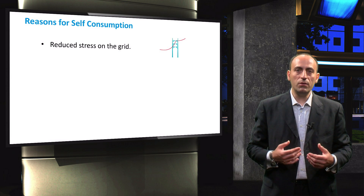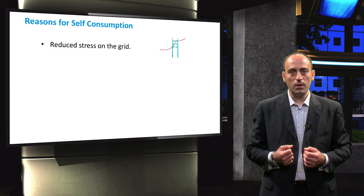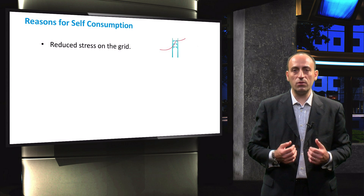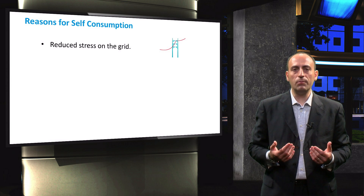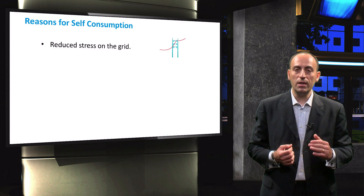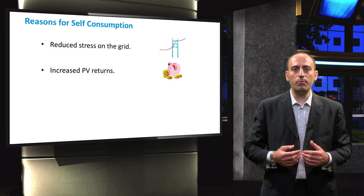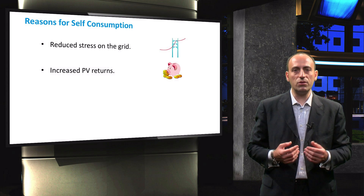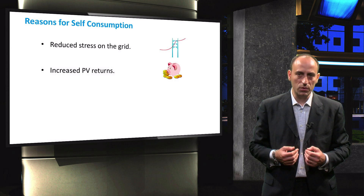So what are the reasons to allow self-consumption in your PV system? The primary benefit, as mentioned earlier, is to reduce stress on the electricity grid. By allowing self-consumption, the amount of electricity instantaneously injected into the grid is decreased. The second benefit consists of the potential to increase PV returns in certain countries through significant savings on a consumer's electricity bill.